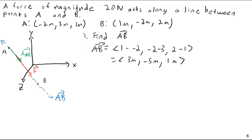That's straightforward — just final minus initial. If this is vector AB, I'm always doing B minus A. The x, y, z components would have the same magnitude but opposite sign for vector BA — so negative 3, positive 5, negative 1. If you made this vector BA instead of AB, the values would be the same but the positive/negative would switch, because you'd be doing initial minus final instead of final minus initial.